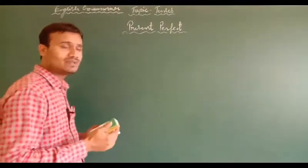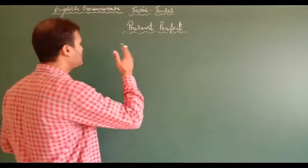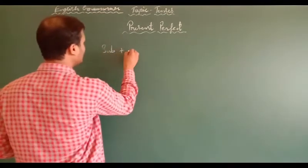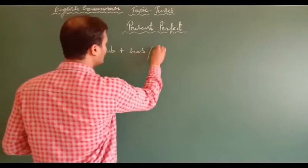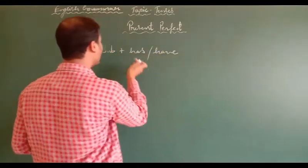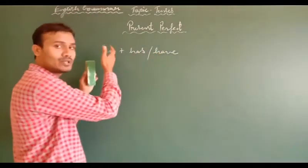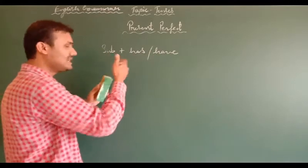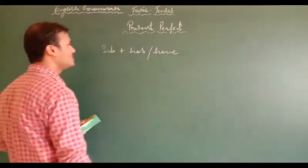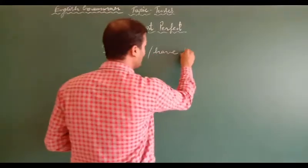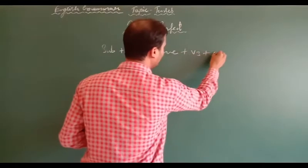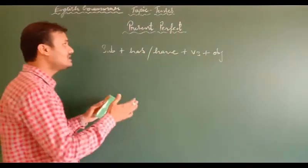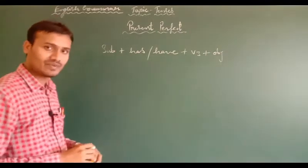Let's see now how you will form the affirmative sentence of present perfect. At first, you have to use subject, then you have to use has or have according to the person and number — whether it is singular or plural. Then verb third form, and then you will use the object. This is the structure of present perfect.